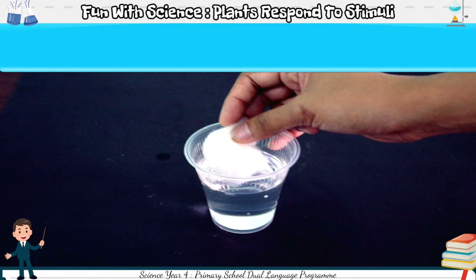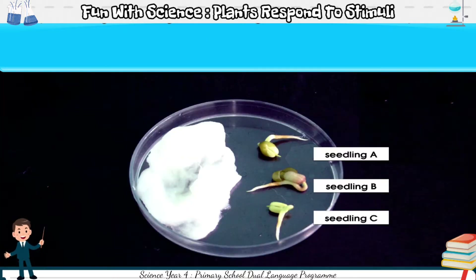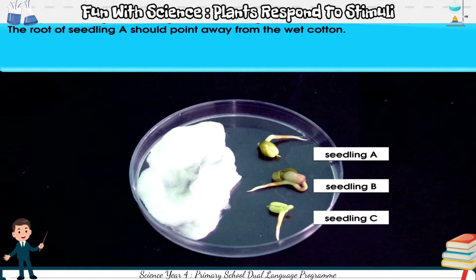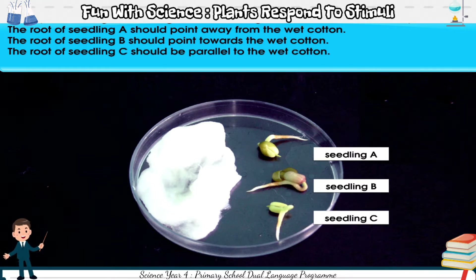First, wet the cotton with water. Next, put the wet cotton on one side of the petri dish. Then put seedling A, seedling B, and seedling C on the other side of the petri dish. The root of seedling A should point away from the wet cotton. The root of seedling B should point towards the wet cotton. The root of seedling C should be parallel to the wet cotton.